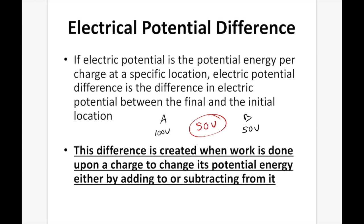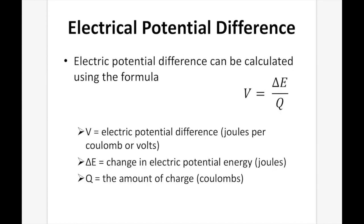This difference is created when work is done upon a charge to change its potential energy, either by adding to or subtracting from it. We could also go from B to C and have 150 volts, giving a potential difference of 100 volts between B and C — so A to B would be using energy, and B to C would be adding energy. Electric potential difference can be calculated using the formula V = ΔE / Q, where V is the electric potential difference in joules per coulomb (or volts), ΔE is the change in electric potential energy in joules, and Q is the amount of charge in coulombs.